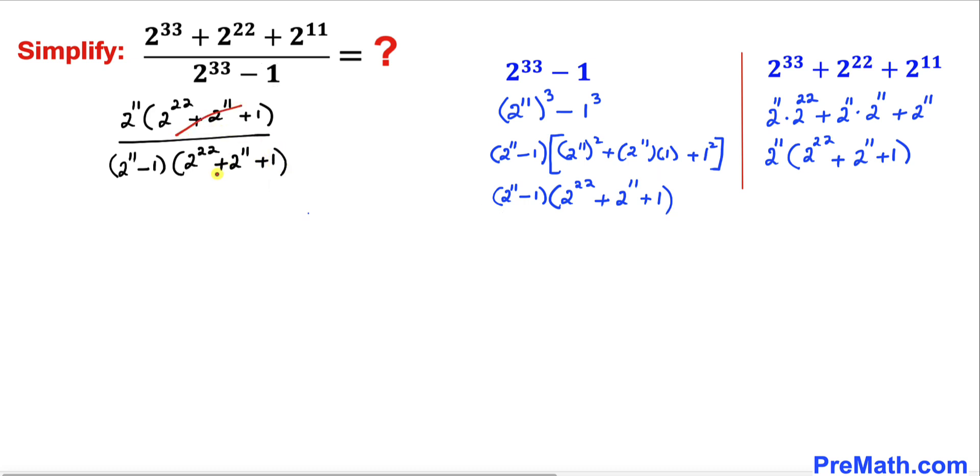Now we can see these two factors, they cancel each other out. So we end up with simply 2 power 11 divided by 2 power 11 minus 1.